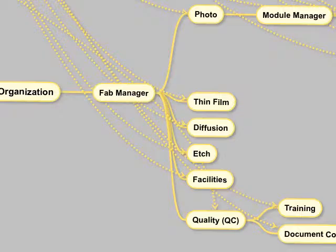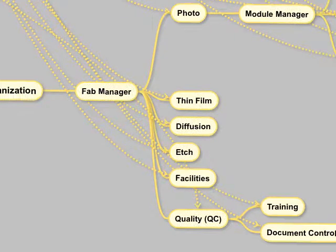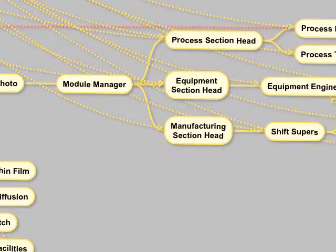So under the fab manager, you have these different modules. At Texas Instruments, this is a snapshot of how the modules were set up. We had a photolithography module. Cindy Allen was my boss in the photolithography. She was the module manager. And then we as engineers reported to section managers. So our module manager, Cindy, actually was the boss of the process section head, the equipment section head, and the manufacturing section head for photolithography. Remember in the video we had the different areas. This is like the yellow room. This is all photolithography.